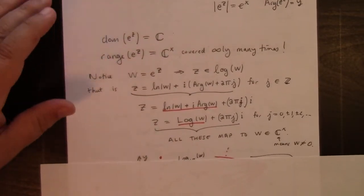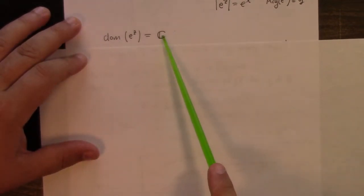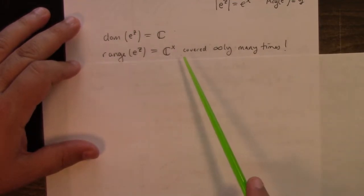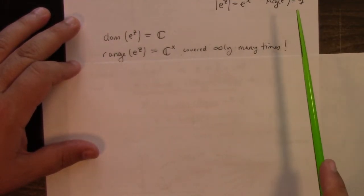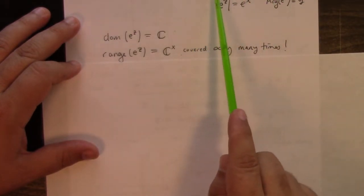Some features here. We should notice that the domain of the exponential is the whole complex numbers, but the range is only the non-zero complex numbers. Because e to the i y is cosine y plus i sine y, and